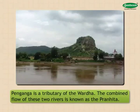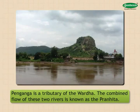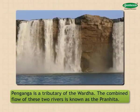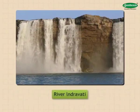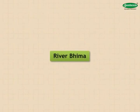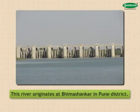The Wardha and Wainganga rivers flow in the eastern part of the state. Wainganga is a tributary of the Wardha. Both Wardha and Wainganga are south-flowing rivers. The combined flow of these two rivers is known as the Pranita river, which further flows into the Godavari. River Indravati flows along the extreme eastern boundary of the state and empties itself into the Godavari.